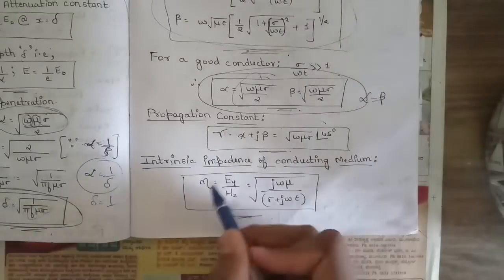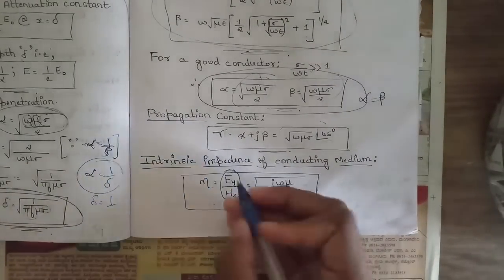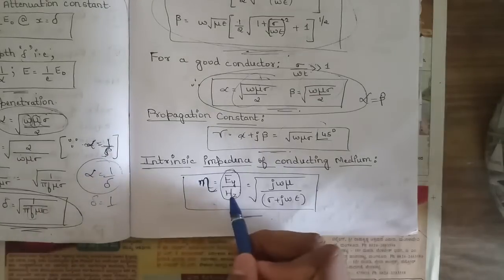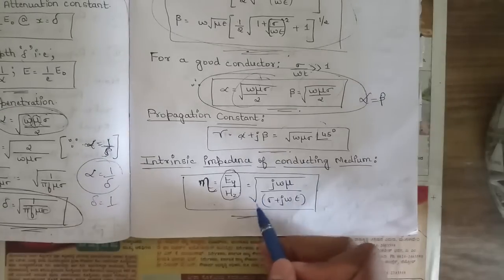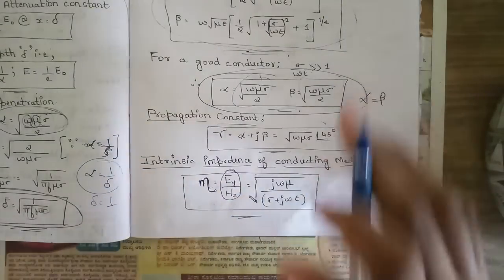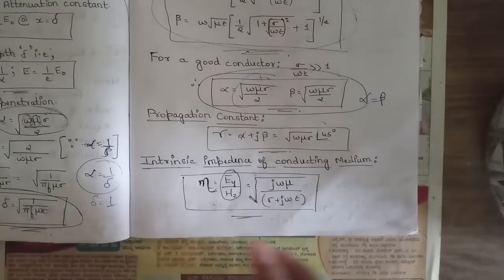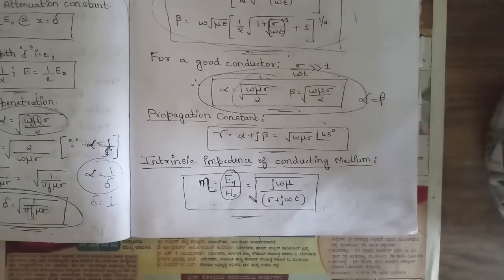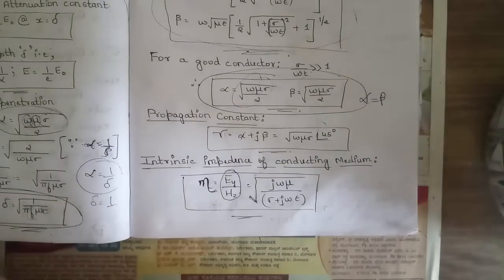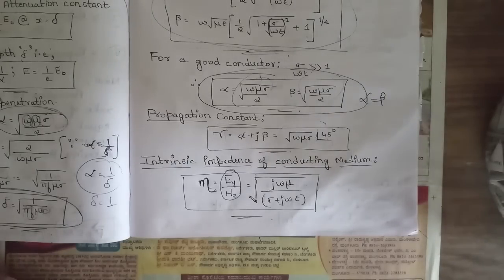The intrinsic impedance η of a conducting medium is defined as Ey/Hz, given by η = √(jωμ / (σ + jωε)). These are the important formulas to note. That's all for skin effect and depth of penetration. Please refer to our playlists and previous videos for this module. Like, share, subscribe, and comment your opinions. Thank you.